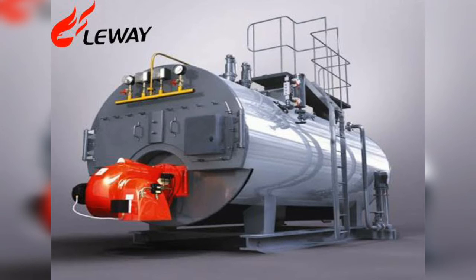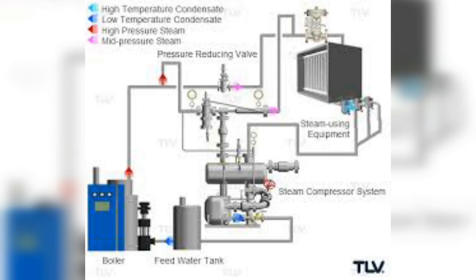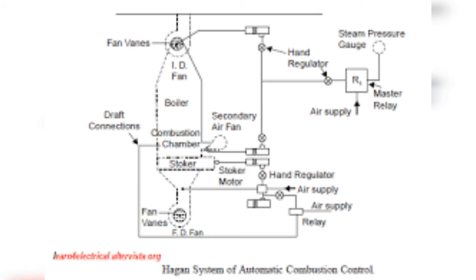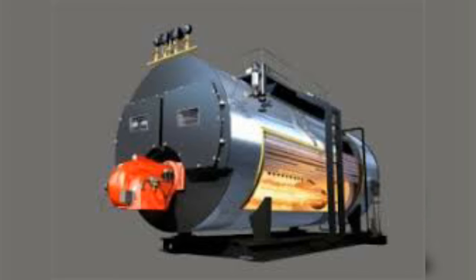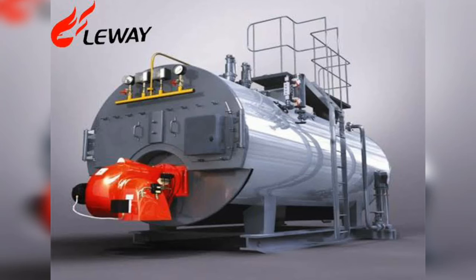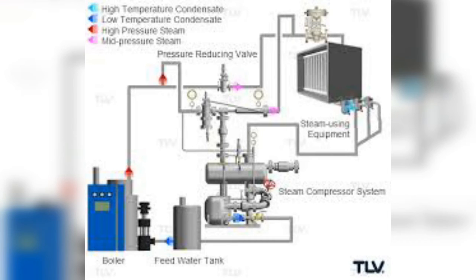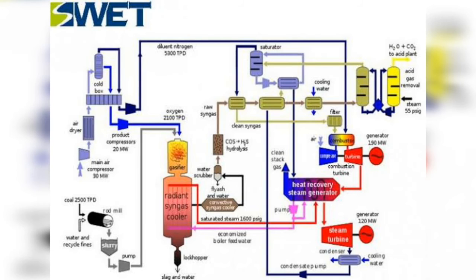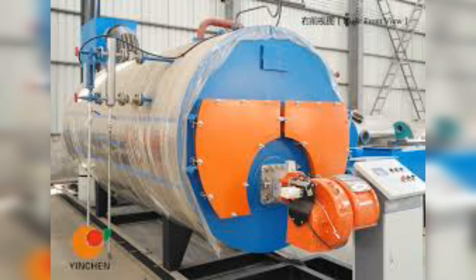Simultaneously, the secondary air fan damper gets opened proportionally. A readjustment of the induced draught takes place, stabilizing the condition in the combustion chamber. Relay R2 alters the position of the forced draught fan servo motor to adjust the position of the forced draught fan so that stable conditions in the combustion chamber are maintained.